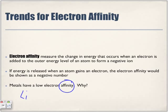Metals have a low electron affinity. Non-metals have a greater affinity — they want the electrons because, remember, metals lose their electrons. And who do they lose them to? Non-metals, because non-metals gain electrons.